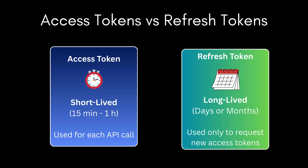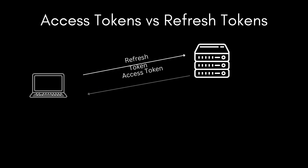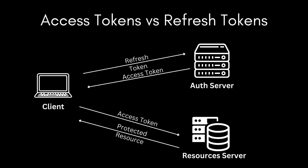Modern systems rarely rely on one long-lived token. Instead, they use a two-token model. Access tokens are short-lived — maybe 15 minutes to one hour — used for actual API calls. Refresh tokens are long-lived — days or months — used only to request new access tokens. Here's how it works: you log in and get both tokens. You use the access token for API calls, and when it expires, your app silently uses the refresh token to get a new access token. This keeps the system secure because stolen access tokens become useless quickly, while refresh tokens are typically stored more securely, often server-side.